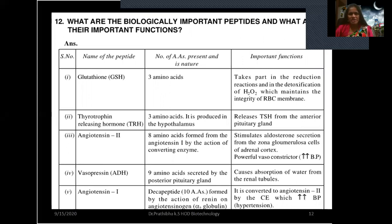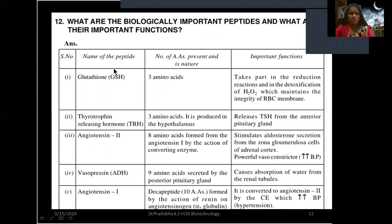What are biologically important peptides and their functions? Glutathione (GSH) contains three amino acids. It takes part in reduction reactions and in the detoxification of hydrogen peroxide, which maintains the integrity of the RBC membrane. Thyrotropin releasing hormone (TRH) also contains three amino acids, is produced in the hypothalamus, and its important function is to release TSH from the anterior pituitary gland.